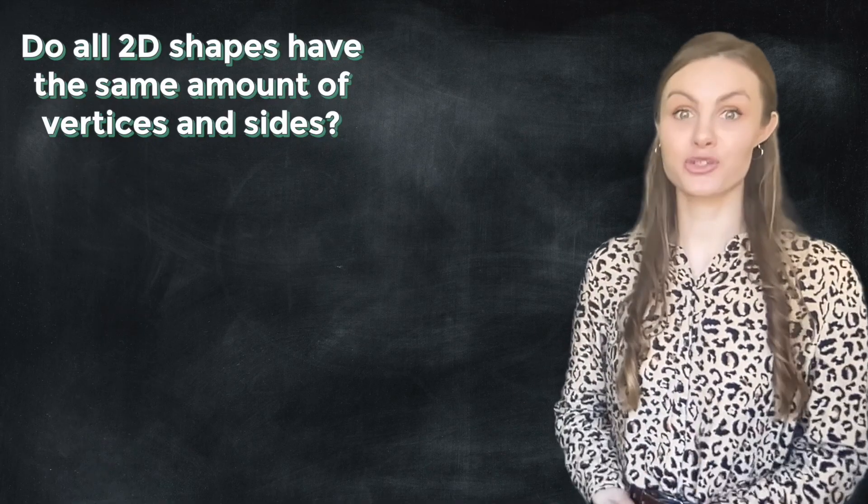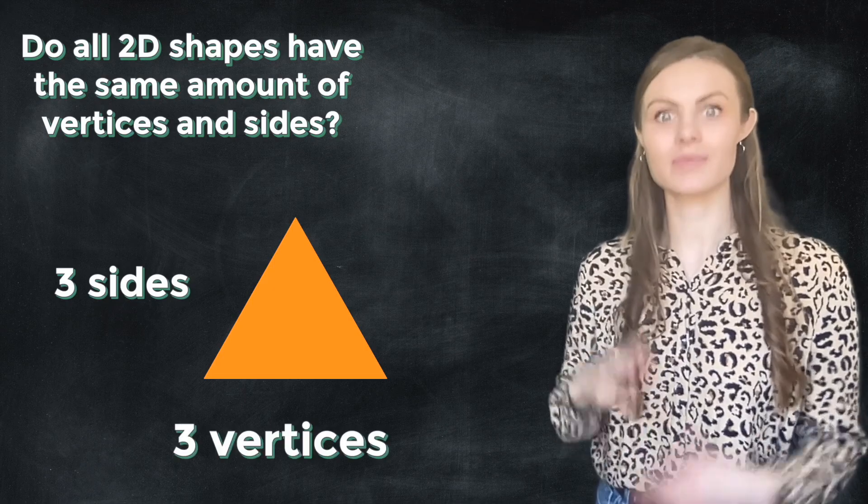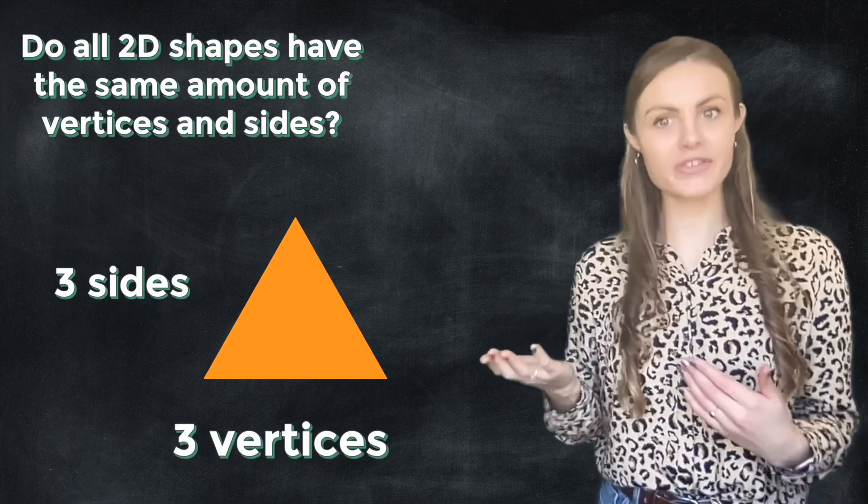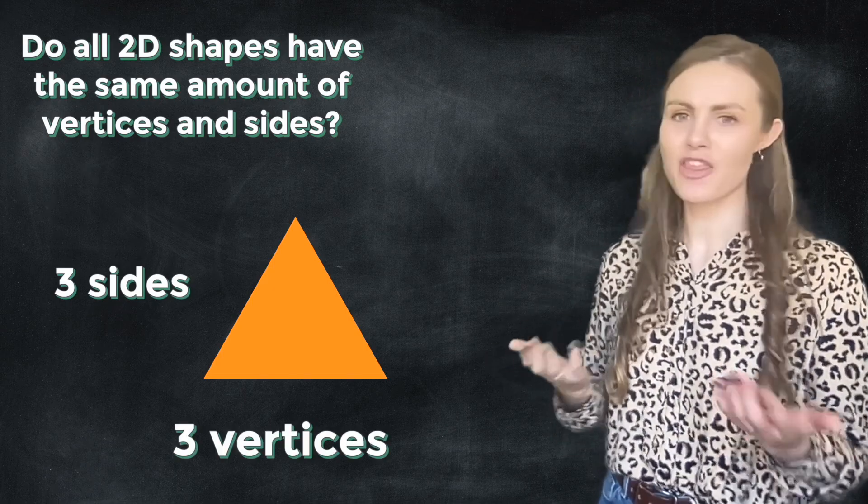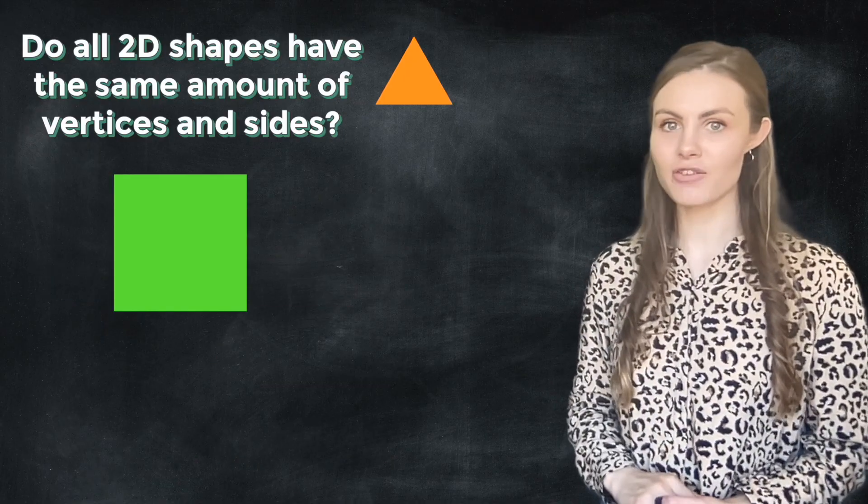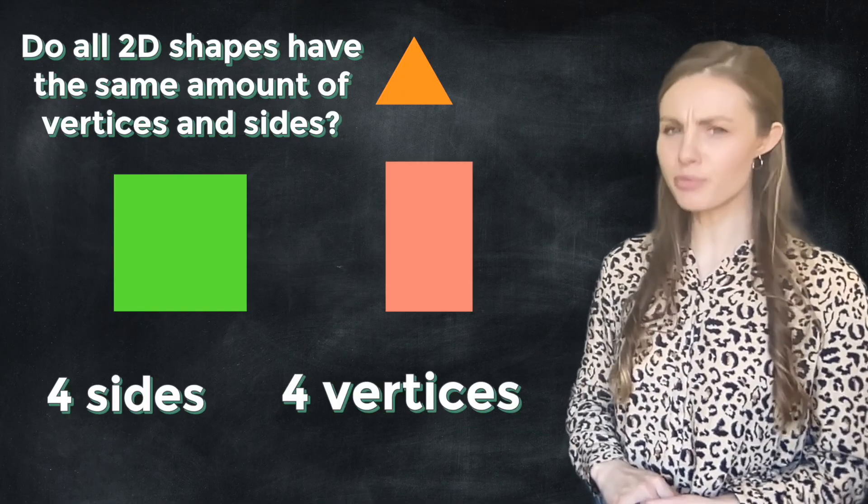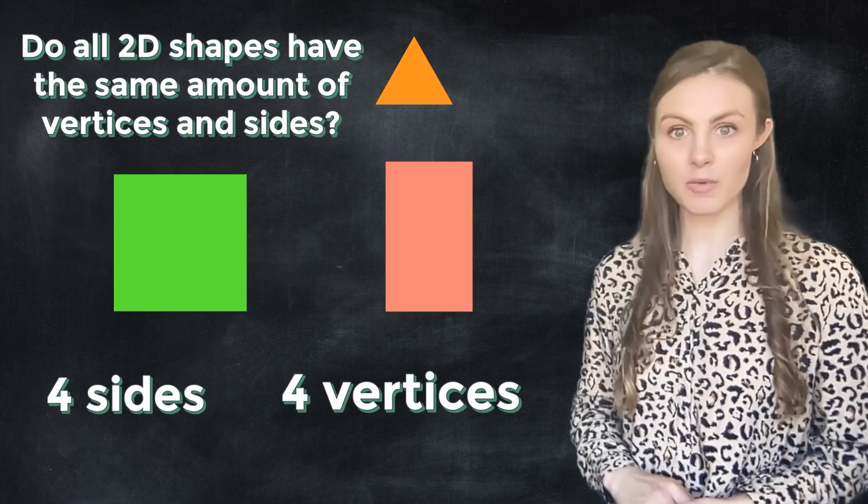So first we had our triangle, didn't we? And that had three sides and three vertices. Okay. Same amount of sides as vertices, but I think we need to test a few more shapes. Next, we had our square and our rectangle. They both had four sides and four vertices. Okay. It's looking pretty promising. Let's keep going.